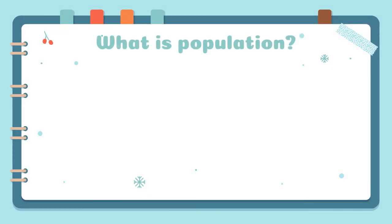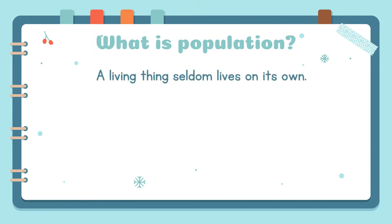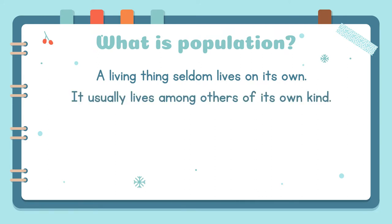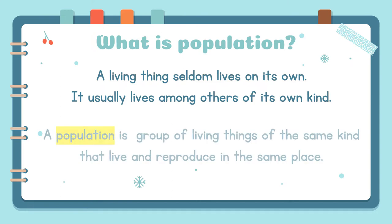What is population? A living thing seldom lives on its own. It usually lives among others of its own kind. A population is a group of living things of the same kind that live and reproduce in the same place.